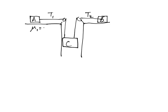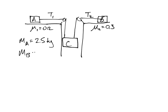To make things more interesting, we're going to say this is 0.2 coefficient of kinetic friction, and this is 0.3. Mass A is equal to 2.5 kilograms, mass B is equal to 3.5 kilograms, and mass C is equal to 6 kilograms.